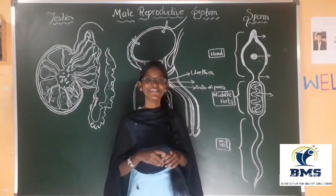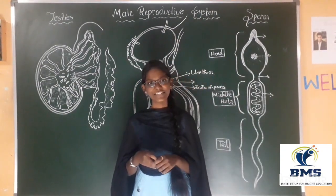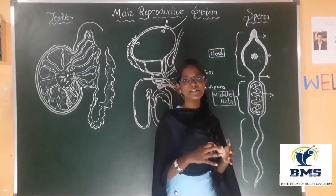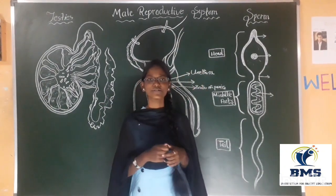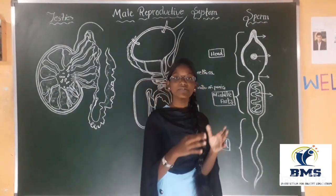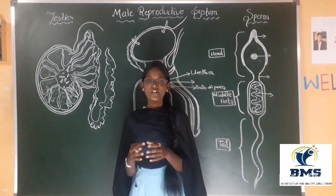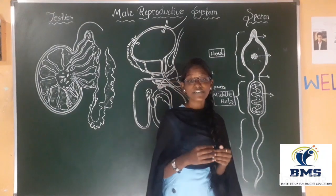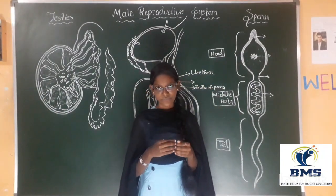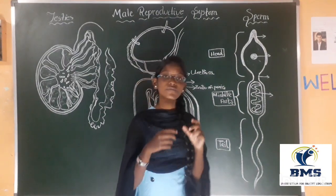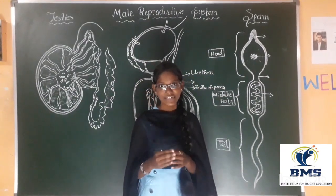Hi to you. Where does this sperm formation take place? Who will decide the baby who is going to be born — is there a boy or a girl? Who is going to decide that? And what is the pathway of this sperm? And what is the structure of it? What is the system included in all these parts? That is none other than the main reproductive system.